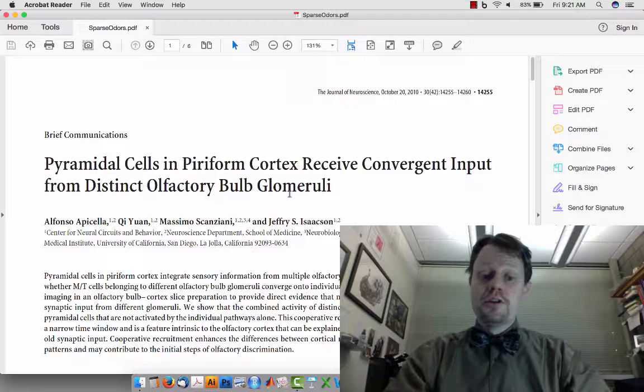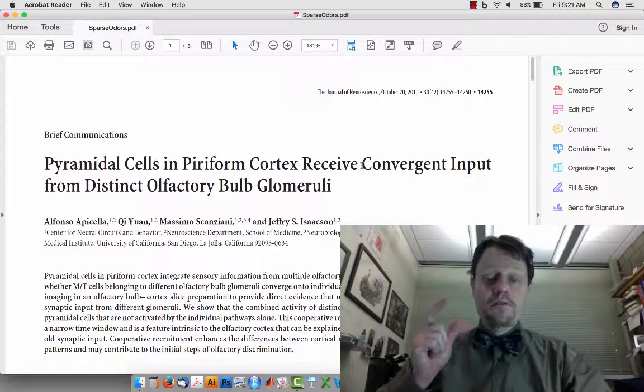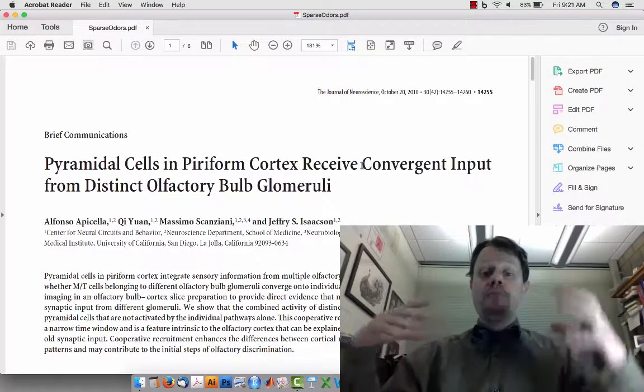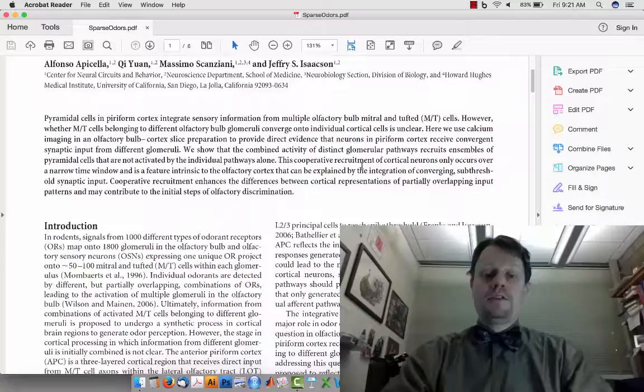So there are different zones in the olfactory bulb called glomeruli, and multiple zones converge on individual neurons. If you take one neuron in piriform cortex, you're going to find that multiple different glomeruli are sending axons that converge on that one cell.